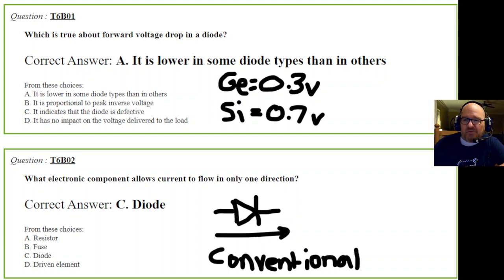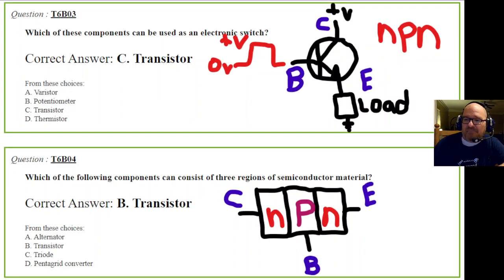Questions 3 and 4: Which component can be used as an electronic switch? The correct answer is a transistor. I have a crude schematic showing zero volts going to positive voltage and back to zero volts, which switches the load on in an NPN transistor. The NPN transistor has a base, collector, and emitter - that's BCE.